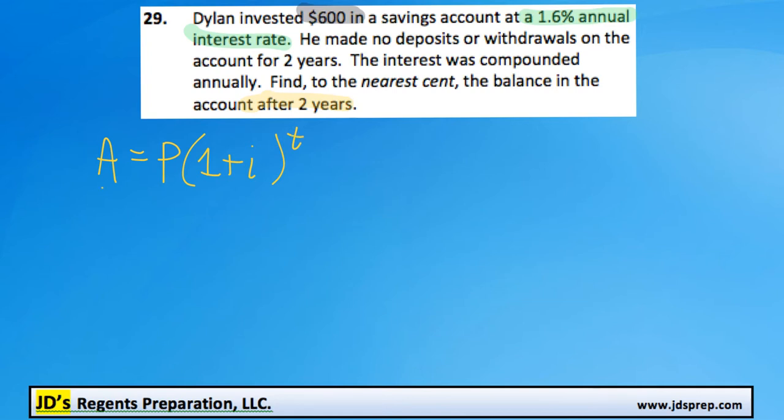A represents the final amount of money earned after a certain amount of time that you've invested. P is the principal or starting amount of money in the bank account. I is the interest rate, and T is, of course, the time.